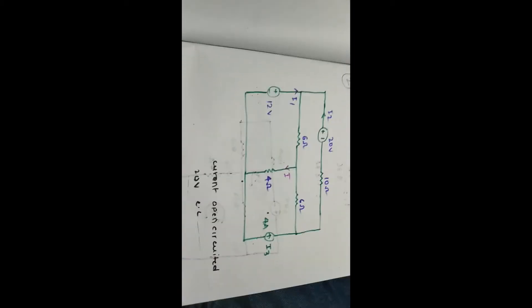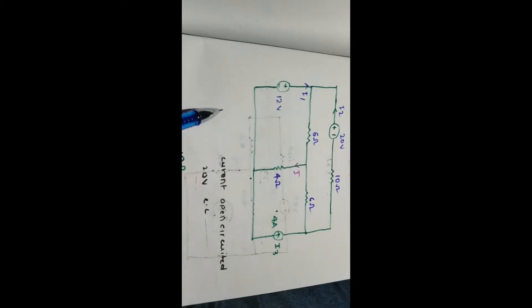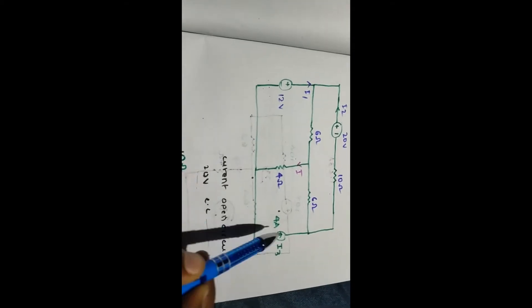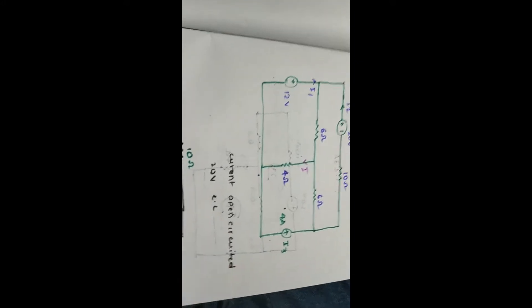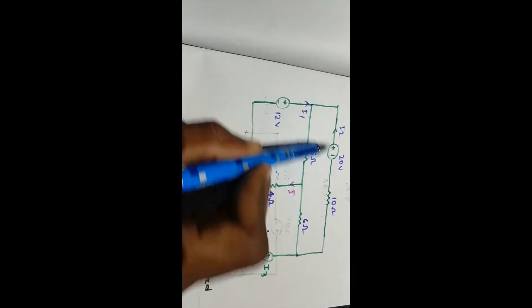First step: the current source is open-circuited. Open-circuited means we remove the current source and leave that branch open. So the current source is treated as open-circuit.